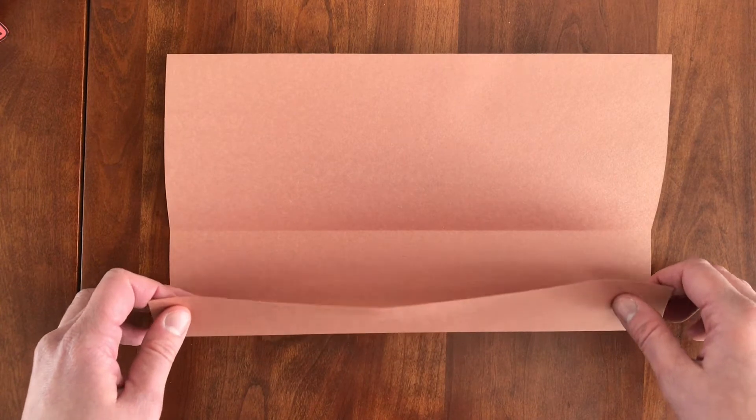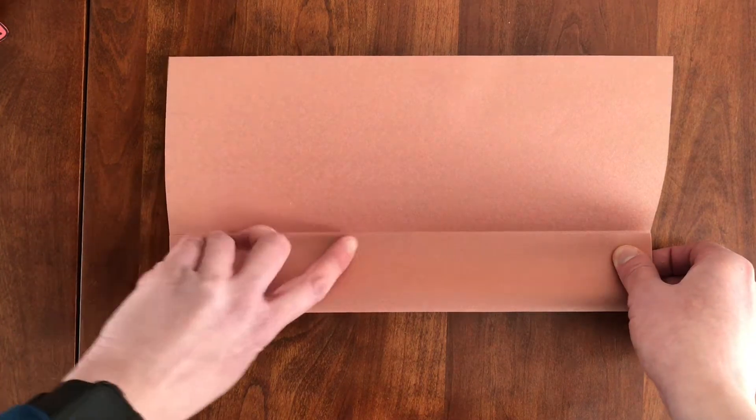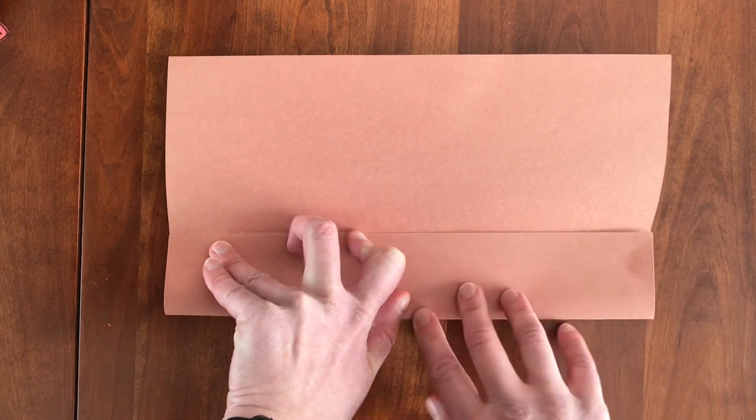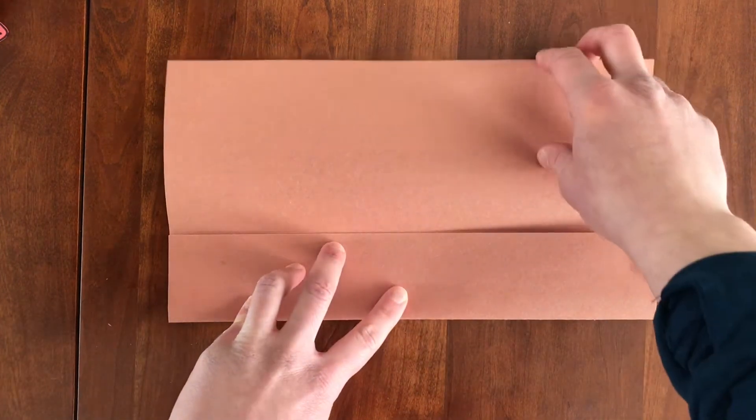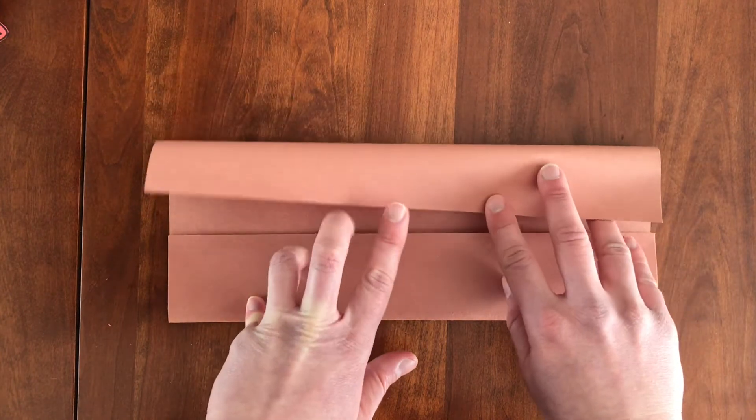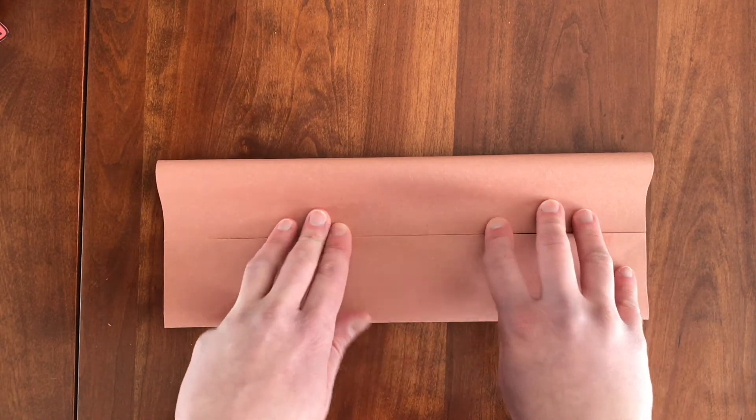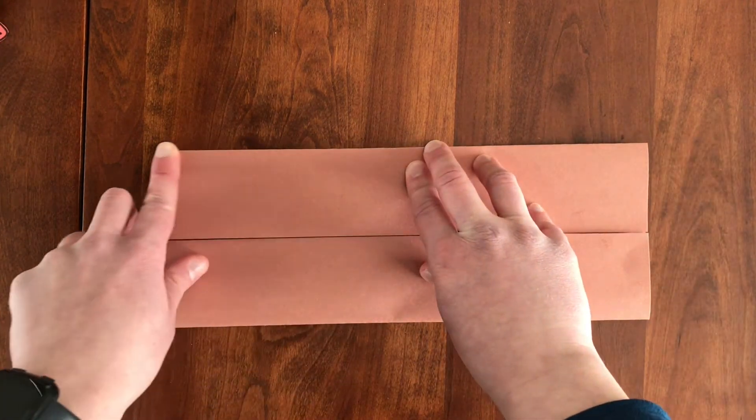Then take those same two corners and you're going to fold them until they meet that center line. Try and line it up as best as you can and then do another nice crease and then you're going to do the same to the top. So take the top and you're going to fold it in until it meets and crease, another crease.